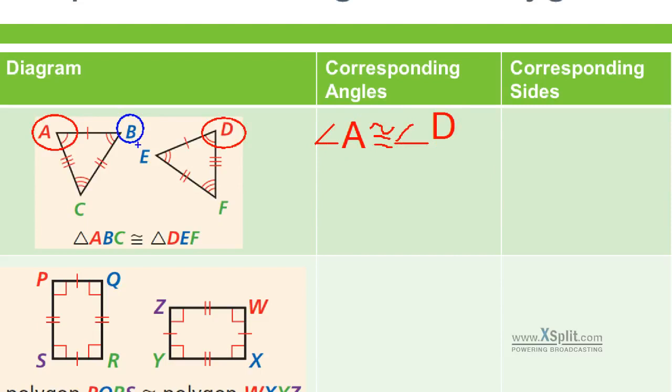Same thing here. It looks like B and E both have two notches going. So I would say that angle B is congruent to angle E. And lastly, it looks like C has three notches, F has three notches on the angle. So we'd say that C and F are both congruent to one another.